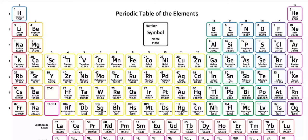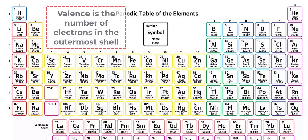The outer electron shell is called the valence shell, and the number of electrons an atom has in its outer shell is its valence.